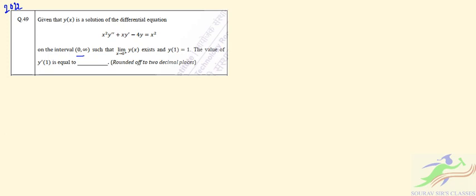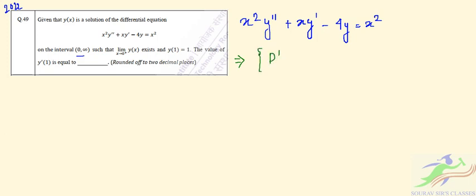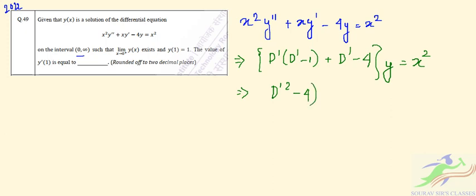We have this equation: x² y'' minus 4y = x². We can rewrite this equation using operator notation. It becomes D'(D' - 1) + D' minus 4y equal to x², which simplifies to D'² minus 4y equal to x².